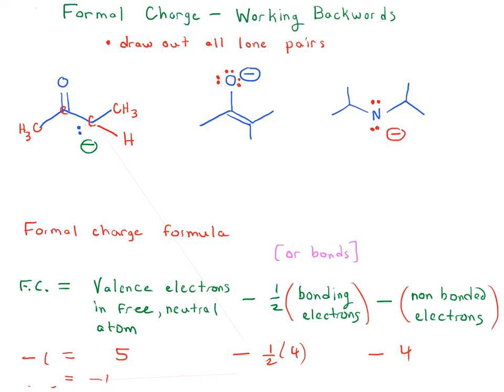So that's another example of how to use the formal charge equation to figure out the number of lone pairs you have present on a given atom. If you're just given the charge and you're not given the actual lone pairs drawn in.